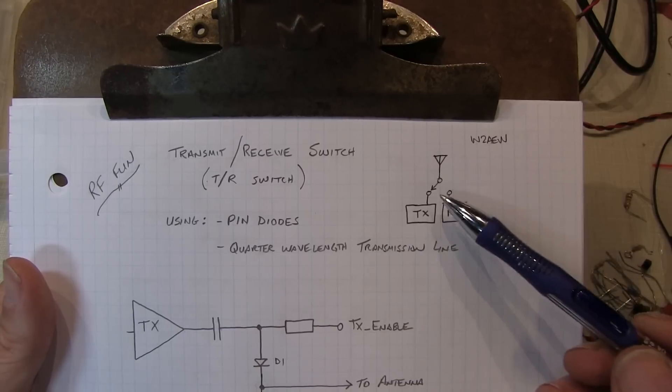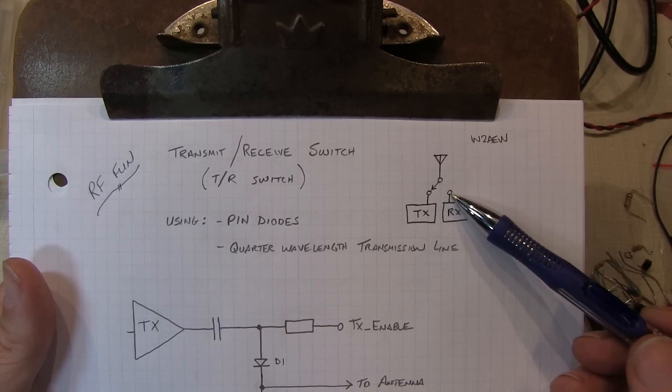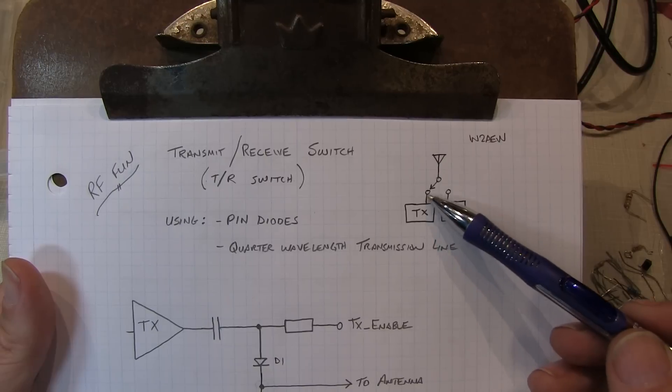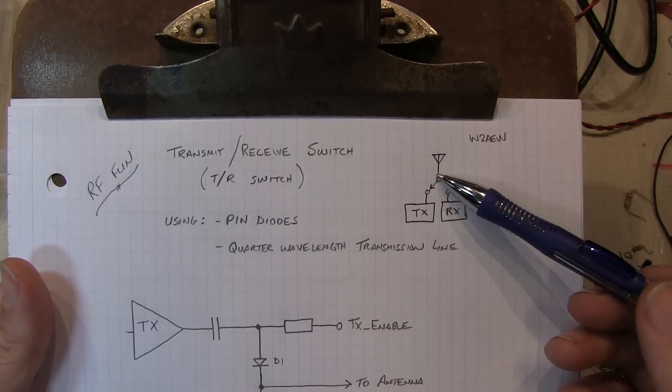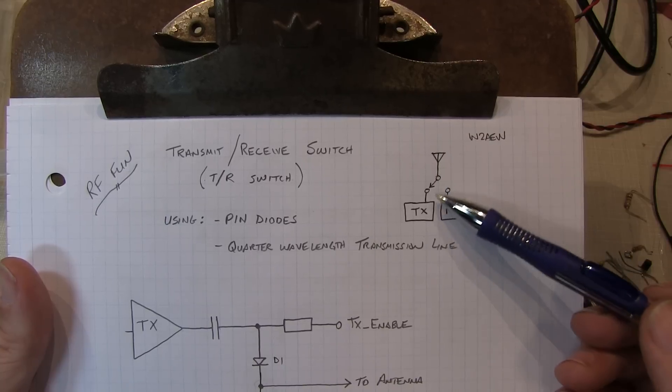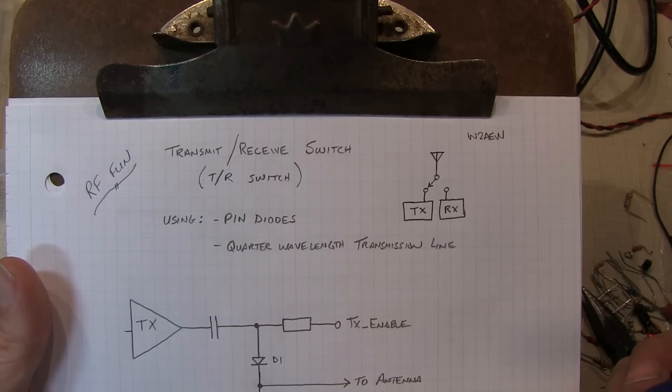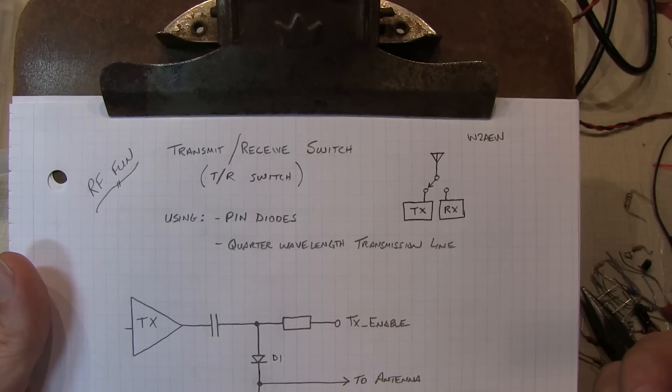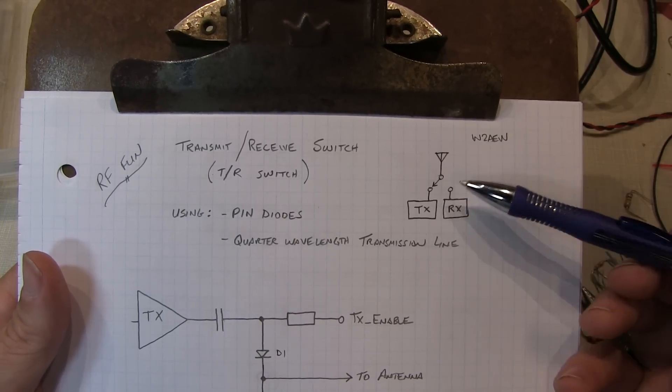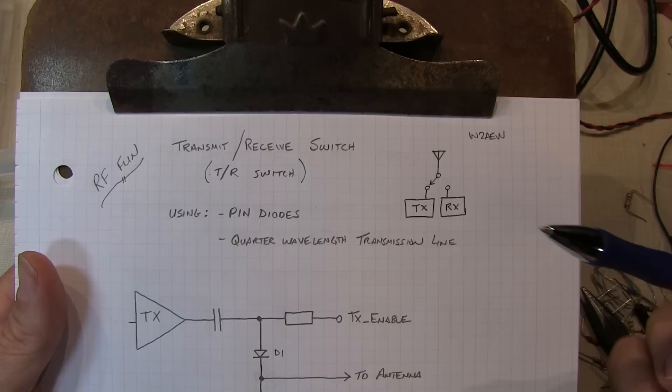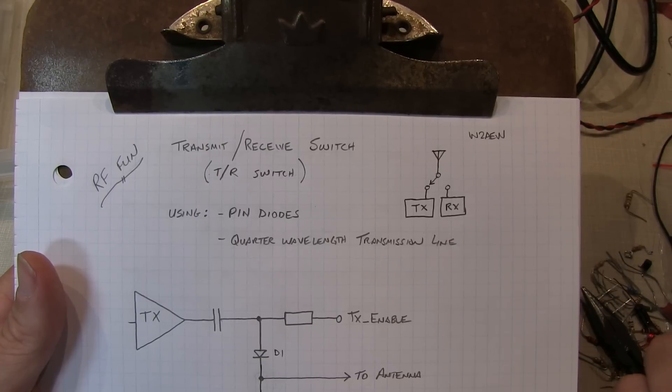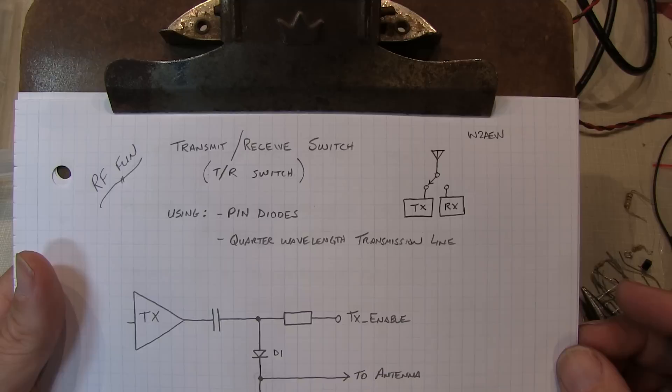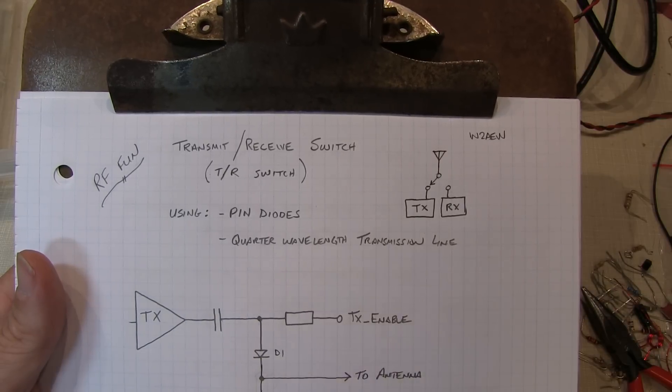The TR switch allows you to connect an antenna to the transmitter or a receiver so that the receiver doesn't get overloaded or damaged when the transmitter is using the antenna, and that the receiver can have sole access to the antenna without being loaded down by the transmitter circuitry. This can easily be done with a relay and is often done that way, but by doing it with pin diodes and a quarter-wavelength transmission line, it's done electronically and therefore without using a relay, it's nice and silent.